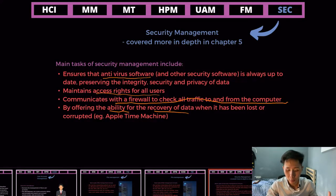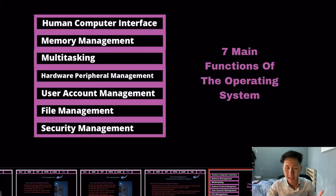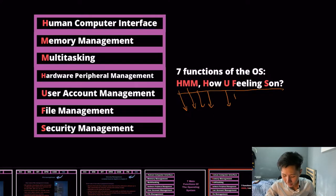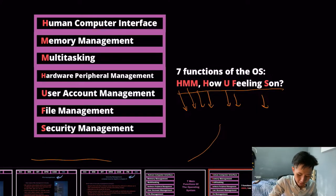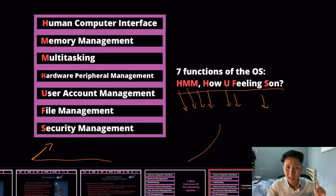Now we have learned all the different functions of an OS. To help you remember the seven functions of the operating system, an acronym has been created — take the first characters to memorize the functions in case they ask in an exam. These are everything about the OS. In the next video, we are going to learn the process of how a computer boots up and what the sequence of software being run is.